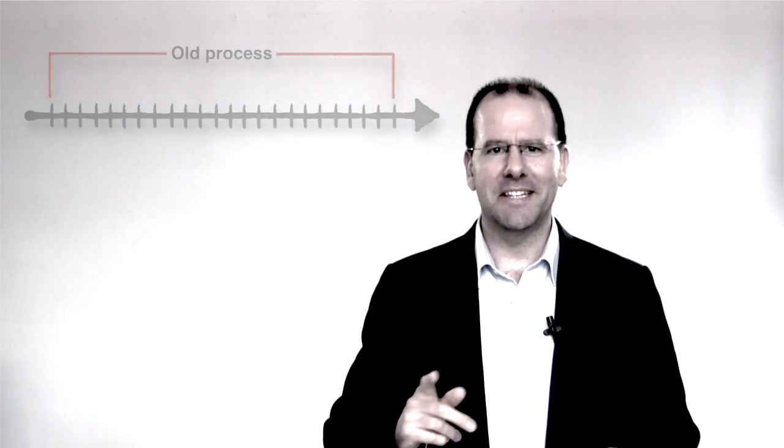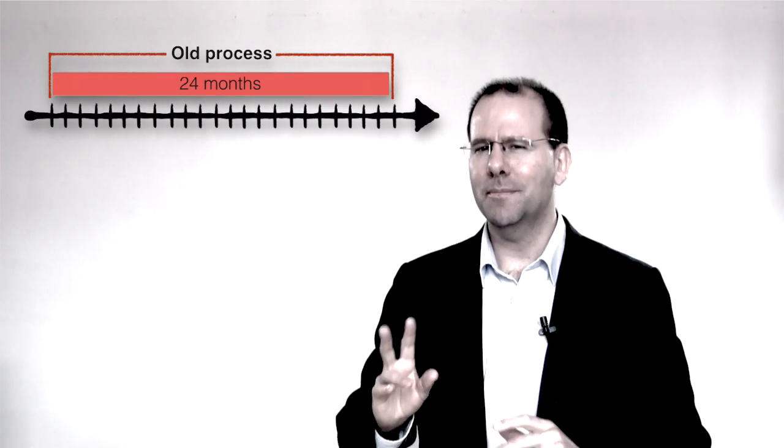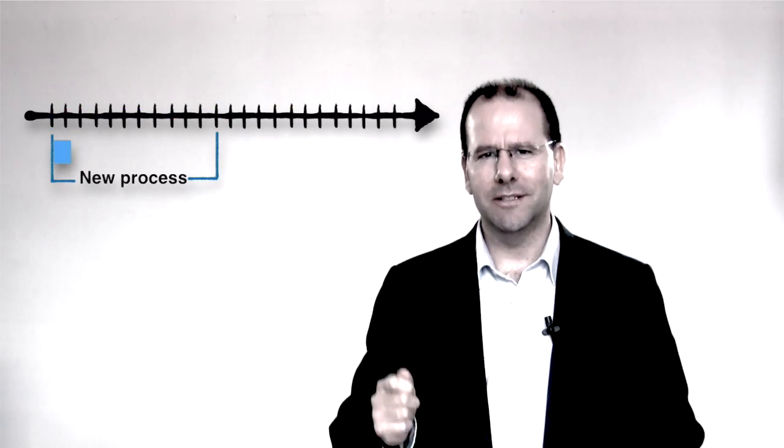The new funding model changes the way in which countries apply for funding. In the past, the time between an application and a grant being signed off was about two years. With the new process it's expected to take about 11 months. An important feature is that at the beginning of each three-year funding allocation period, each country will know how much money they'll be able to apply for and receive. The amount allocated will be a function of country need and available resources amongst other factors. Extra money above the allocation will be designated for high impact interventions, awarded on a case-by-case basis.